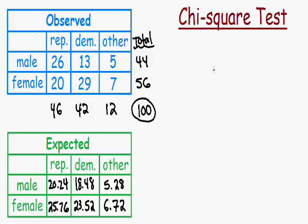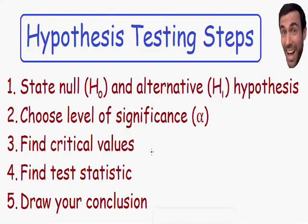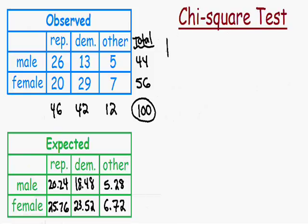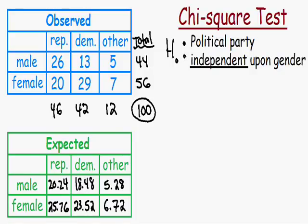We're going to use the same steps for a hypothesis test as for a chi-square test. Step one is to state the null and alternative hypothesis. The null hypothesis, H₀, is what you currently believe to be true: that gender is completely independent of the political party you support. The political party is independent of gender — gender has no influence on which political party you support.